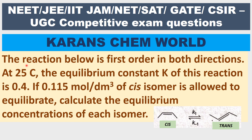The question is: the reaction below, CIS to trans isomerization, is first order in both directions. At 25 degrees Celsius, the equilibrium constant for this reaction is 0.4. If 0.115 moles per liter of CIS isomer is allowed to isomerize, calculate the equilibrium concentration of each isomer.